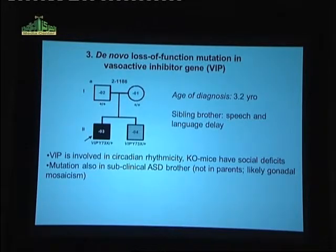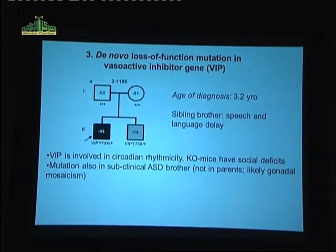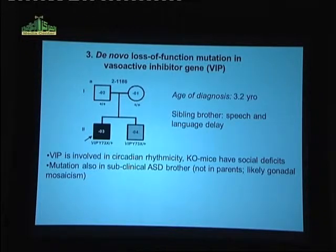The last example is a de novo loss-of-function mutation — and I emphasize de novo because it's a little more complicated — in the vasoactive inhibitor protein VIP2. This gene has been discussed for a long time based on animal model and functional studies as a candidate. This is the first mutation found where we identified a loss-of-function mutation in the index case.